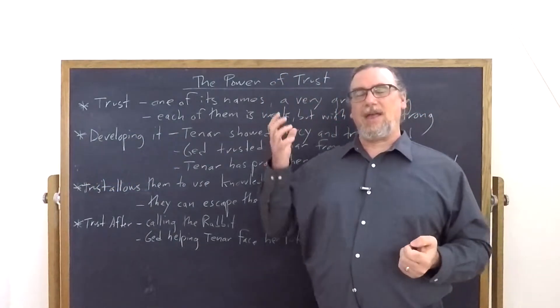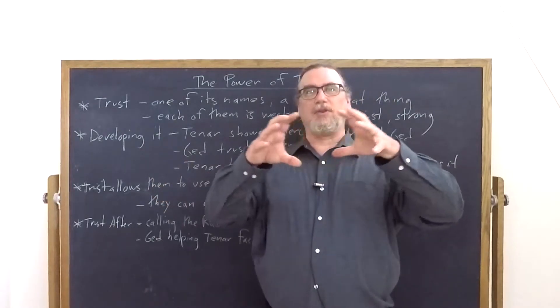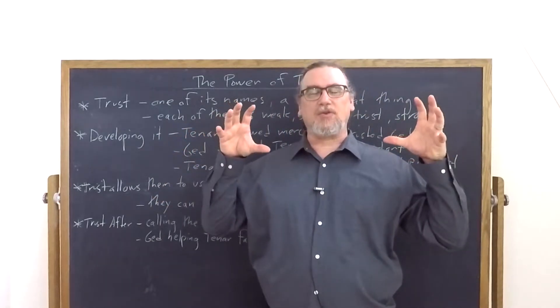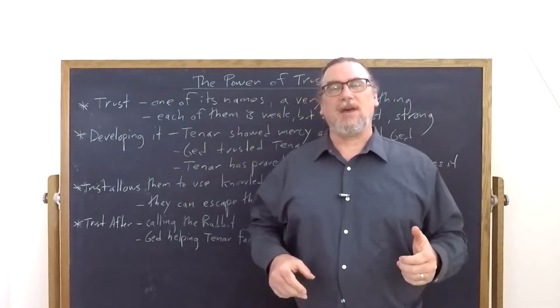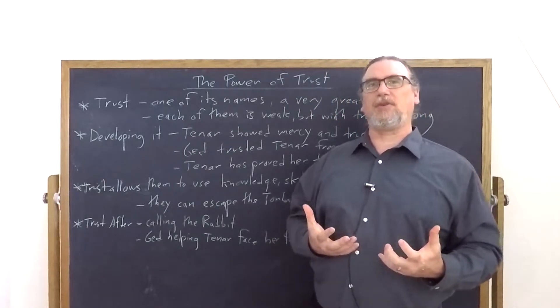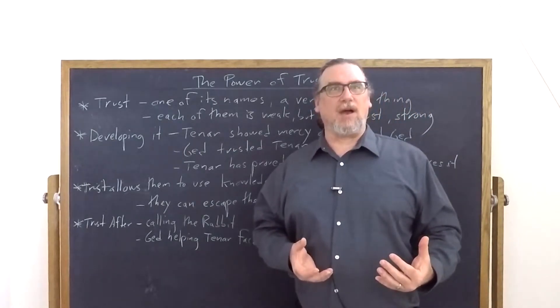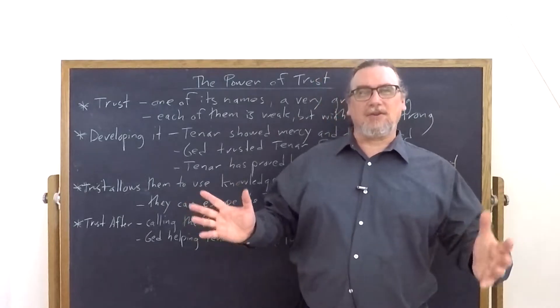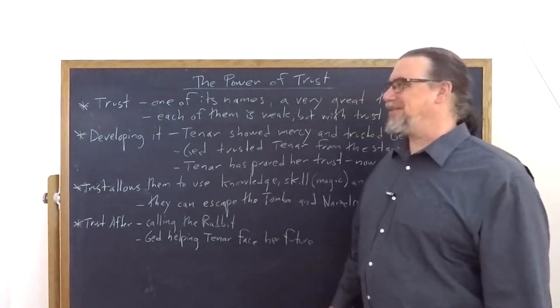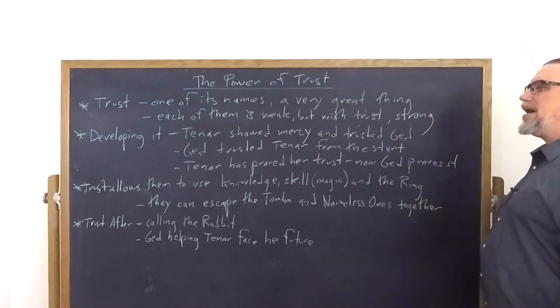There's Tenar, there's Ged, and there is the trust uniting them, the trust between them, the trust that has developed, which is not a person, but is something like an entity. There's actually a fourth entity, as we're going to talk about in just a moment, that's going to help them out of there.